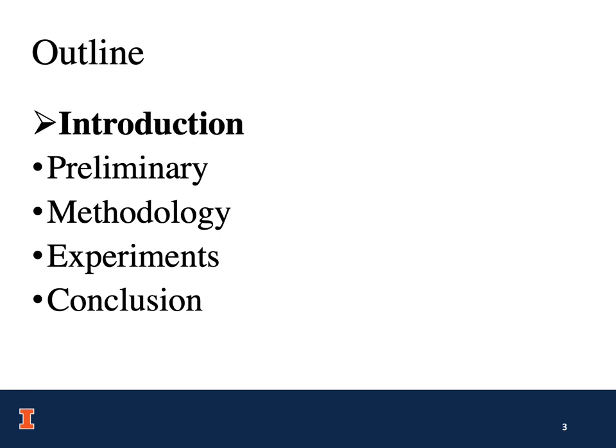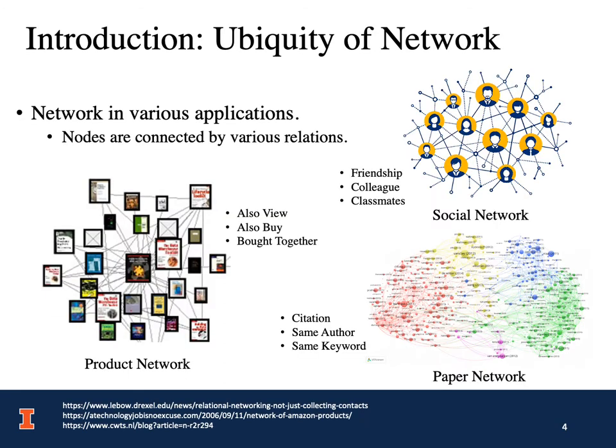Networks have been observed in many applications, for example, the product network, the social network, and the paper network. Those within all of the networks are connected by various relations. For example, in the product network, the relations include also view, also buy, and bought together. In the social network, relations include friendship, colleague, and classmates. In the paper network, papers can be connected by the citation, by the same author, or by the same keywords.